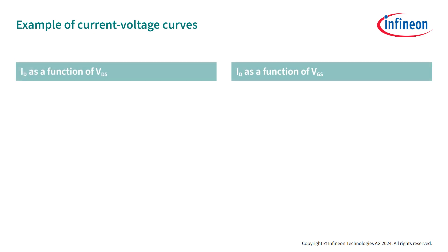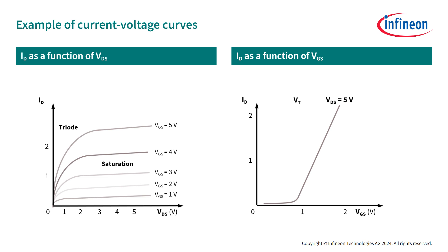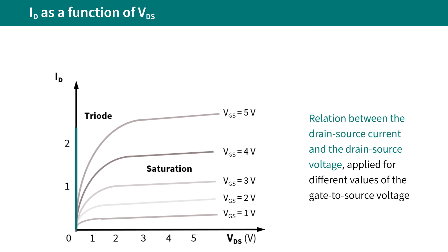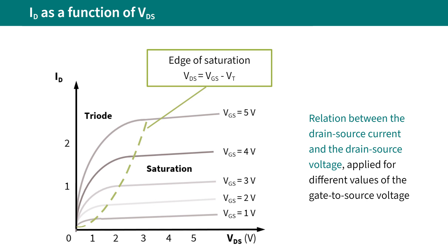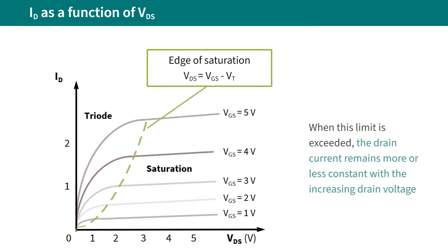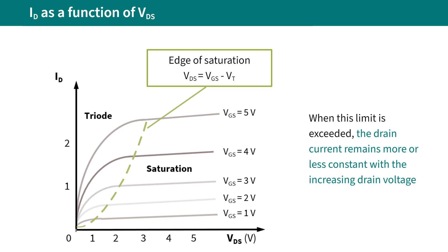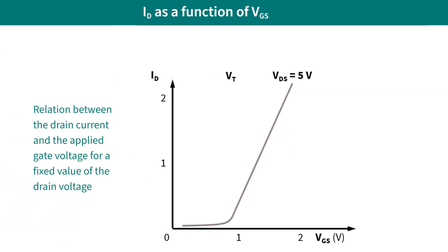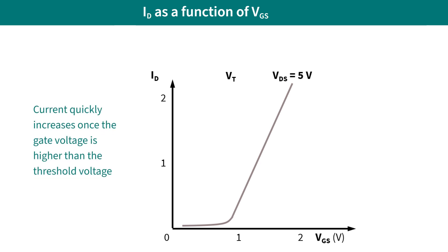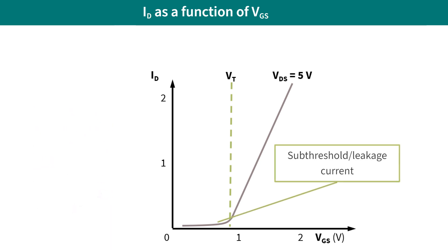Let's look at some typical datasheet curves related to the linear and saturation modes, showing the relationship between voltage and output current. By analyzing this graph, we can see the relation between the drain-source current and the drain-source voltage applied for different values of gate-to-source voltage. The dotted line indicates the edge of the saturation boundary until the current increases linearly with the applied drain voltage; when this limit is exceeded, the drain current remains more or less constant. Additionally, another graph shows the relation between the drain current and the applied gate voltage for a fixed drain voltage. The current quickly increases once the gate voltage exceeds the threshold voltage. Note that there is some current flow before the threshold voltage is reached — this is called sub-threshold current or leakage current.